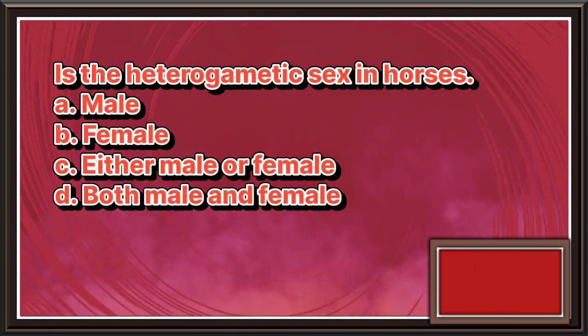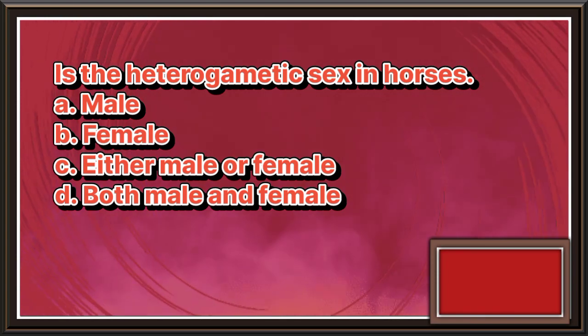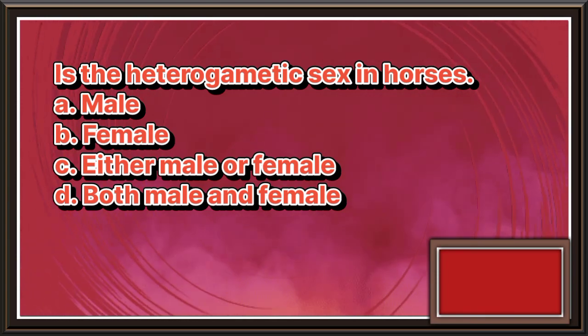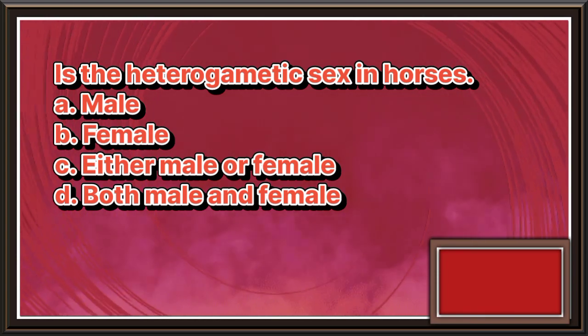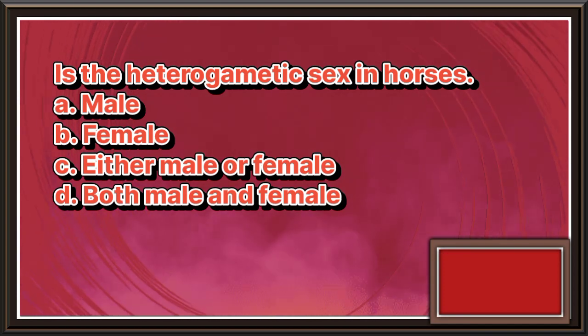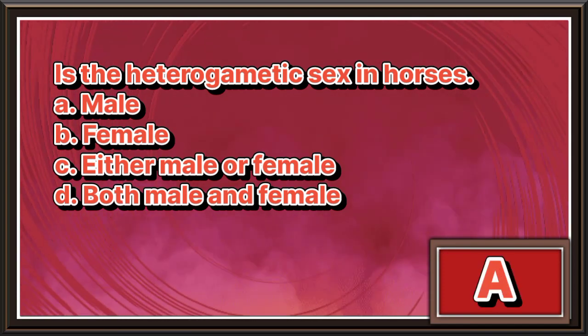Is the heterogametic sex in horses. A. Male. B. Female. C. Either male or female. D. Both male and female. The answer is letter A.